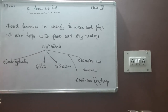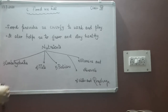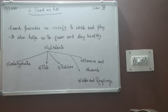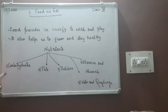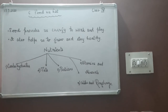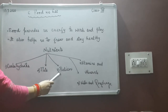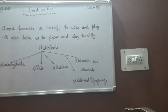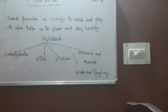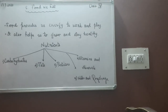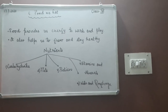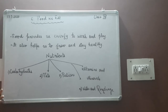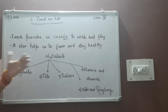There are different types of nutrients. The important nutrients are carbohydrates, fats, proteins, vitamins, minerals, water, and roughage. Carbohydrates are present in some foods and help your body get energy. Fats and proteins are the body's building blocks.